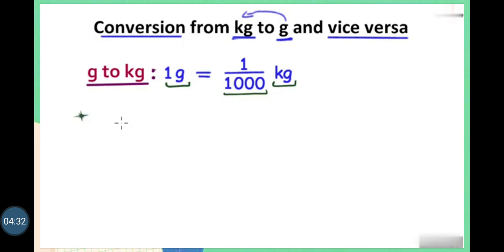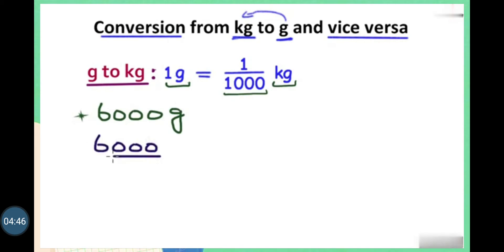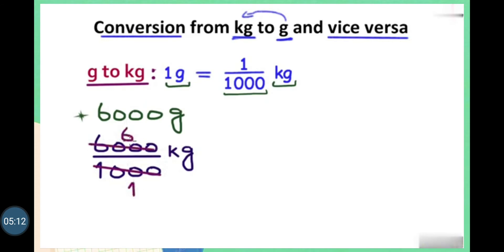Let's have one example. Here we have 6000 grams and we have to convert it into kilograms. So we divide 6000 by 1000. When we have zeros, we can cancel the zeros in the numerator and denominator, because written in fractional form means we are dividing them. 1000 times 1 is 1000 and 1000 times 6 is 6000. So after dividing, we get 6 kilograms. So 6000 grams equals 6 kilograms.